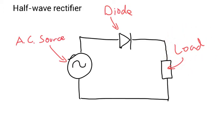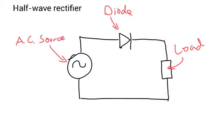So the electricity — if this side is positive and this side is negative, the electricity is going to come round here, it's going to flow through, round and back. So for half of the wave, some part of the electricity is being pushed round here and it's going to flow through. However, if the electricity is trying to go this way round, it'll hit the wall and it won't be able to flow.